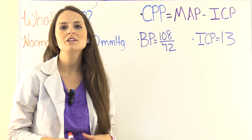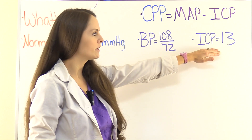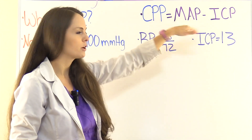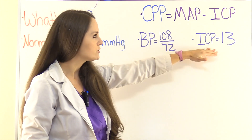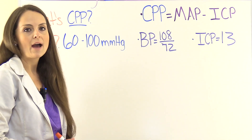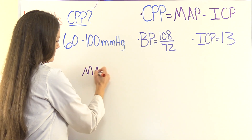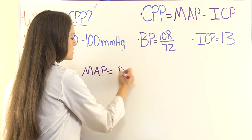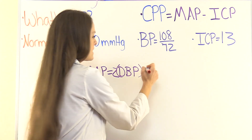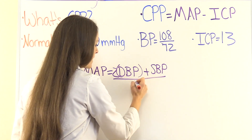To solve for this, we have to know two things: the patient's blood pressure and their intracranial pressure reading. We'll first figure out the mean arterial pressure, because we already know our intracranial pressure — it's 13 — so we can go ahead and plug it in. To solve for the MAP, remember this formula: MAP is equal to the diastolic blood pressure times two, plus the systolic blood pressure, divided by three.